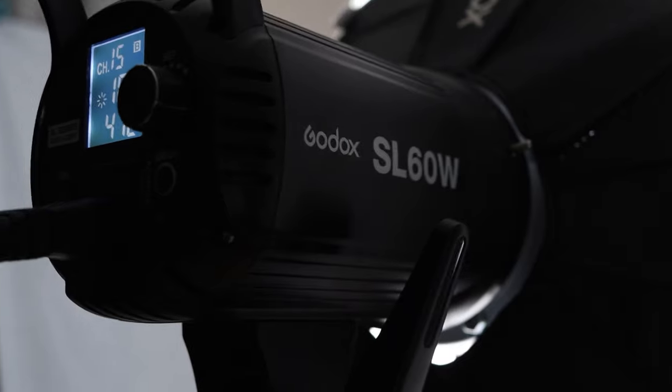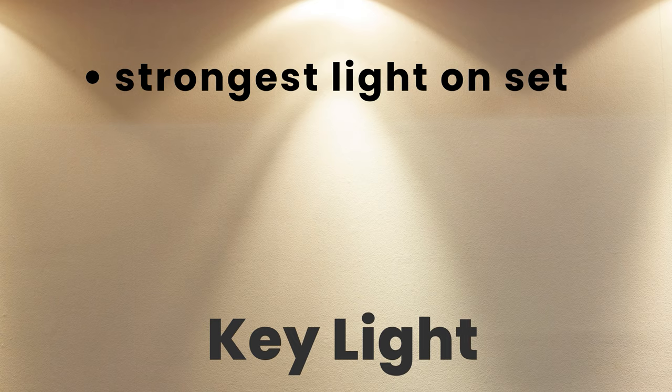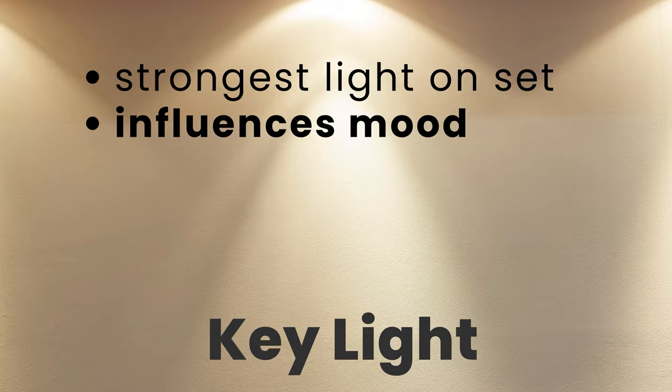When we're talking about lighting, the first one up is your key light. Your key light is your main light that is busy lighting your subject. It is the primary light source being used to light your subject in video and film production. It is typically also the strongest light source on set. Your key light defines the look and feel of your video, and its position is important because of the shadows it will be creating.